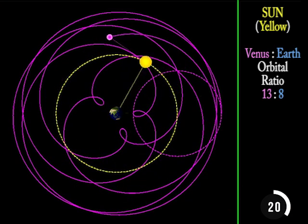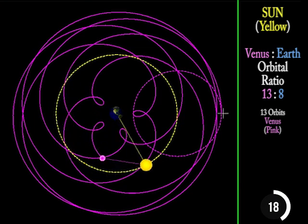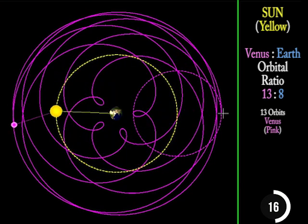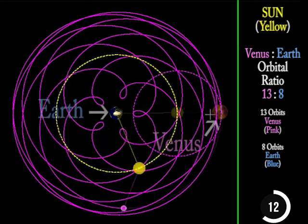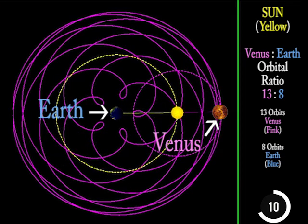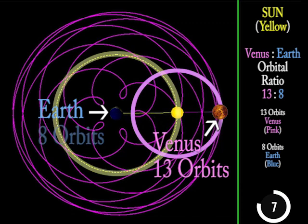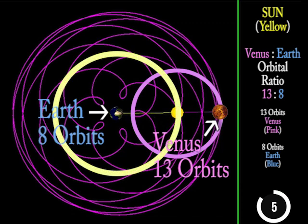In other words, this illustration is showing that for every 13 times the planet Venus orbits the Sun, the Earth will orbit the Sun 8 times before both planets arrive back at the same starting point - 13 orbits of Venus to 8 orbits of the Earth.